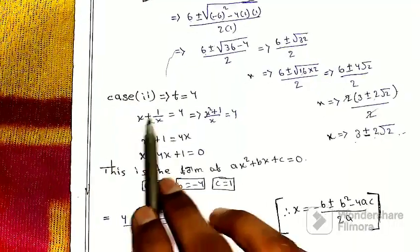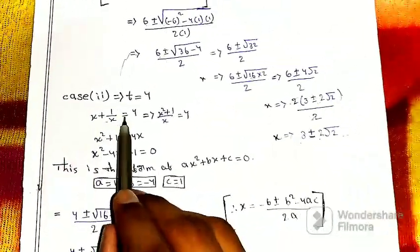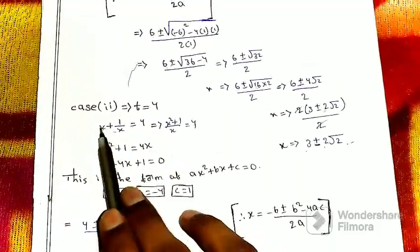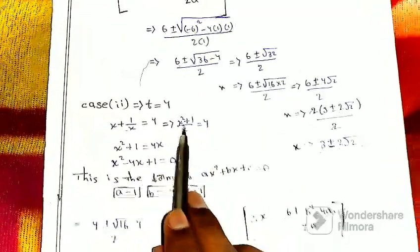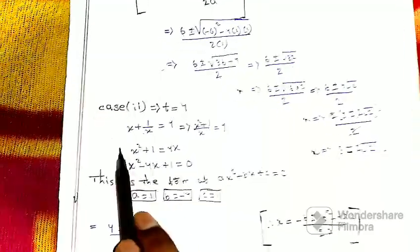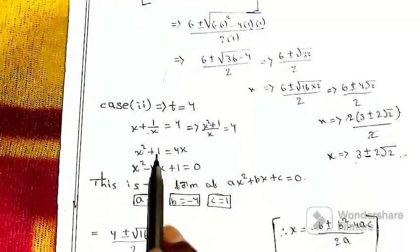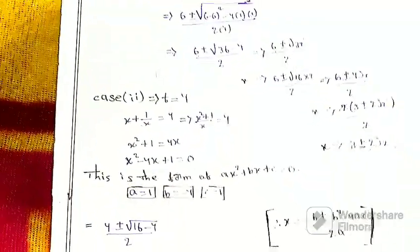Case 2: t is equal to 4. So x plus 1/x equals 4. Multiplying by x: x² plus 1 equals 4x. Rearranging: x² minus 4x plus 1 equals 0. This is of the form ax² plus bx plus c equals 0.